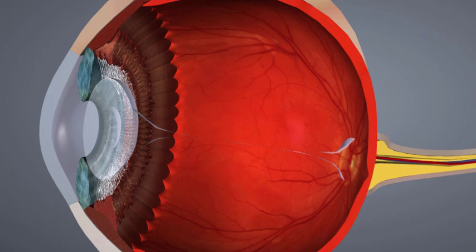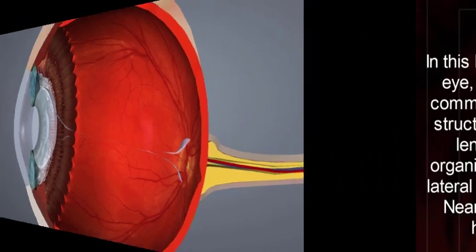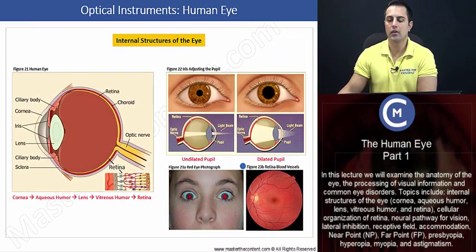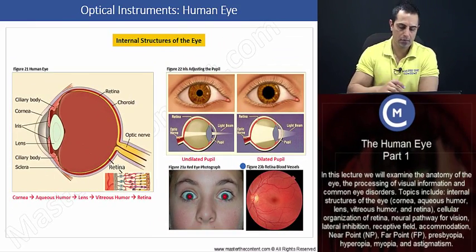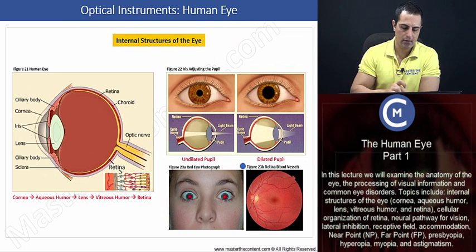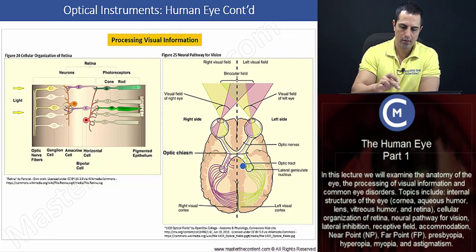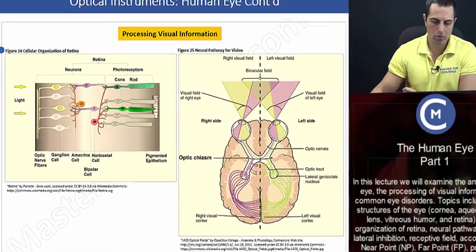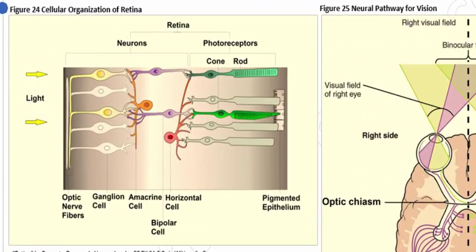Let's go back to our lecture and take a deeper look at the retina now. We left off at figure 23B. Let's proceed to our next slide where we can examine the retina, beginning with figure 24.